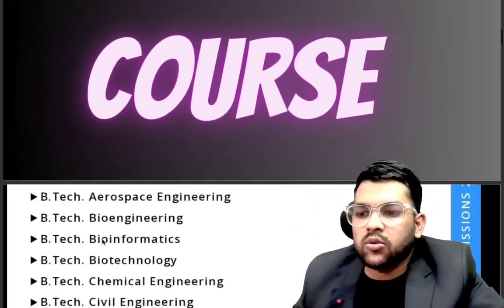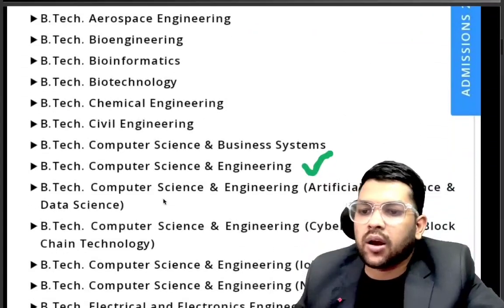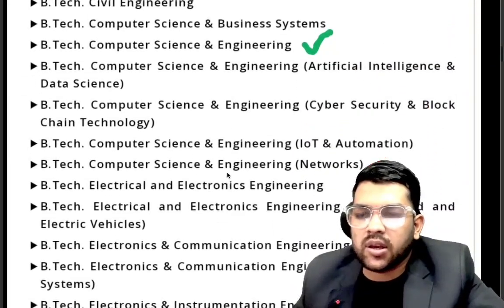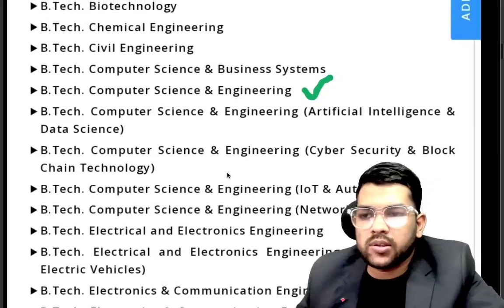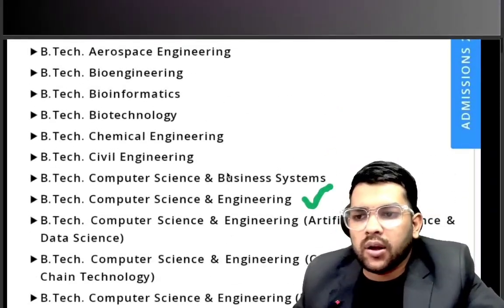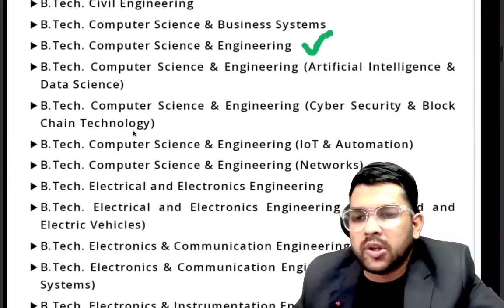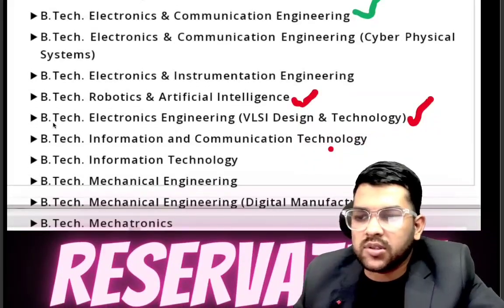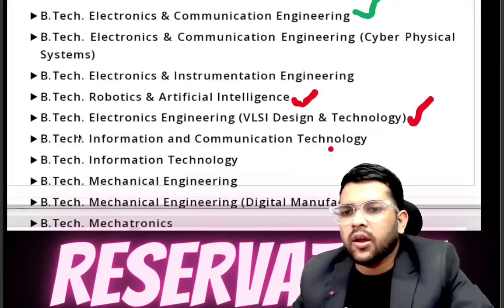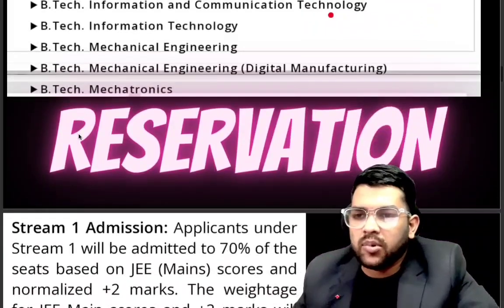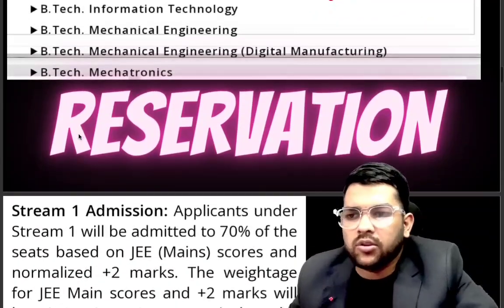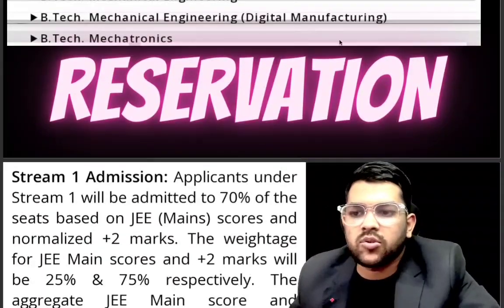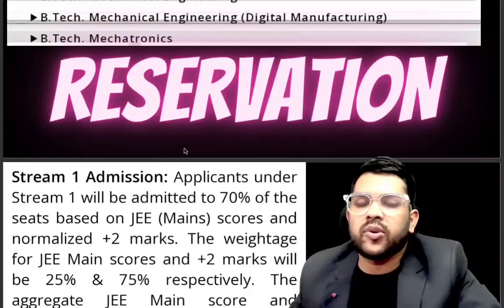Here are the courses — you can check on screen. Computer Science and Electronics and Communication Engineering is available in their second campus as well, but all these programs are available at the Thanjavur campus. Around 25 to 30 branches are available in B.Tech, so there are lots of branches available.